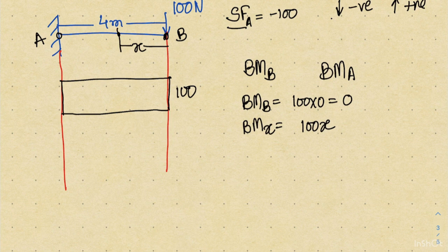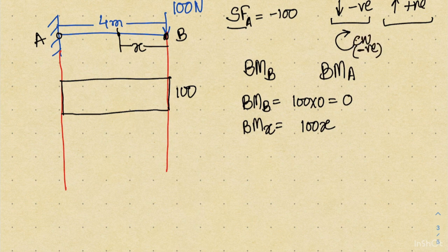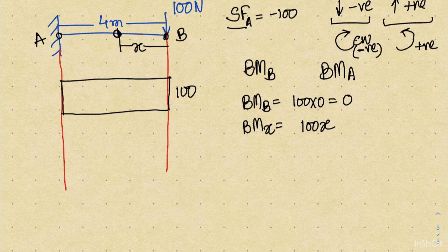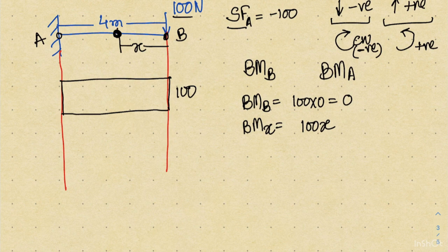As with shear force, we define a sign convention for bending moment. Different books use different conventions; I will follow: counterclockwise bending moment is positive, clockwise is negative. If I find the bending moment at distance x from point B with the load acting downward, the moment of this 100 Newton load about that point is in the clockwise sense. If in doubt, visualize the beam pivoted at that point — the downward load causes clockwise rotation. So by my convention it is negative, giving minus 100x Newton-meter.